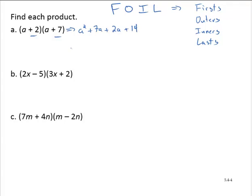And now if we combine like terms, we have a² + 9a + 14.